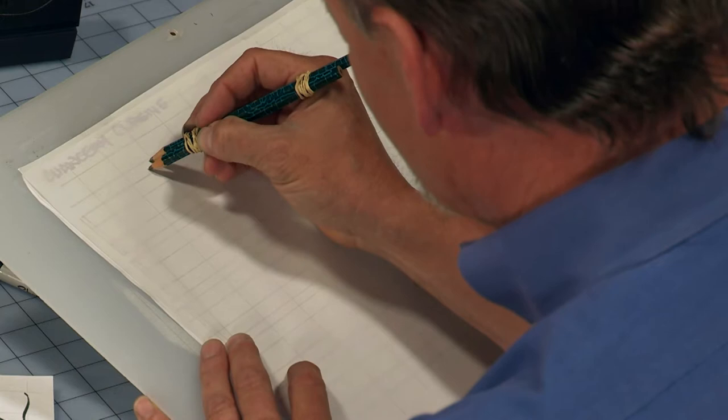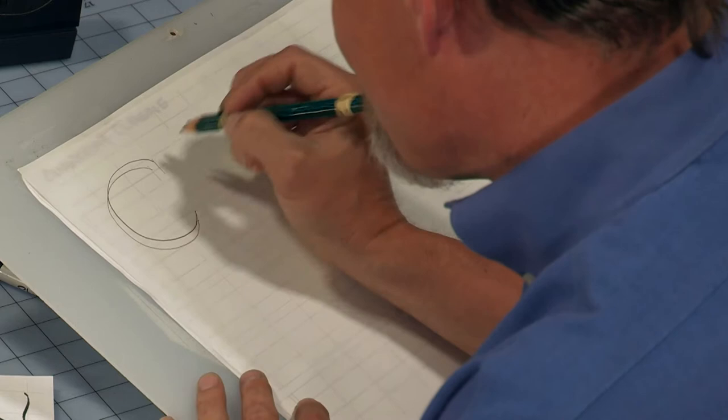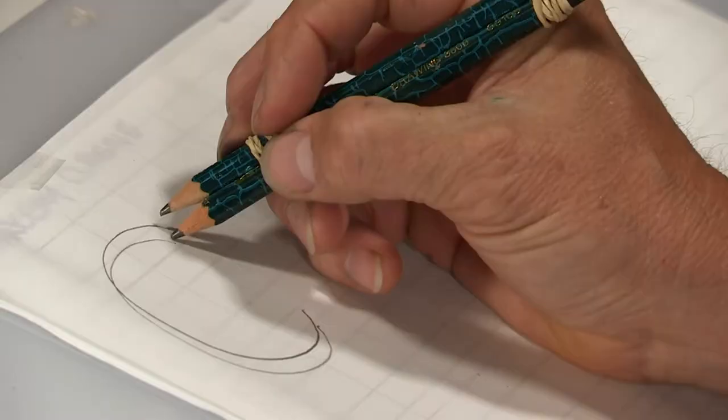One curve. And I want to point out that unlike in the letter C where we added this stem, I'm not doing that on the letter G because I felt like there was enough meat to the letter without having that. So I'm just going to let the end of that curve stay up there.